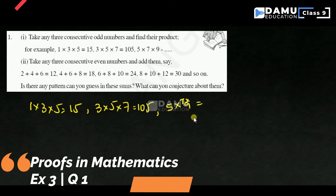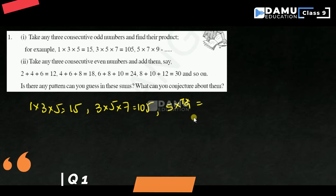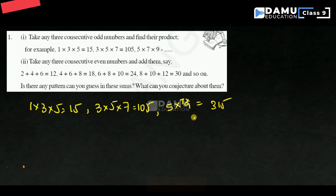So, 5 into 7 into 9: 5 sevens are 35, then 35 into 9 is 315. So, for this, is there any pattern? Can you guess in the sums? Any pattern is there, what can you conjecture about them?